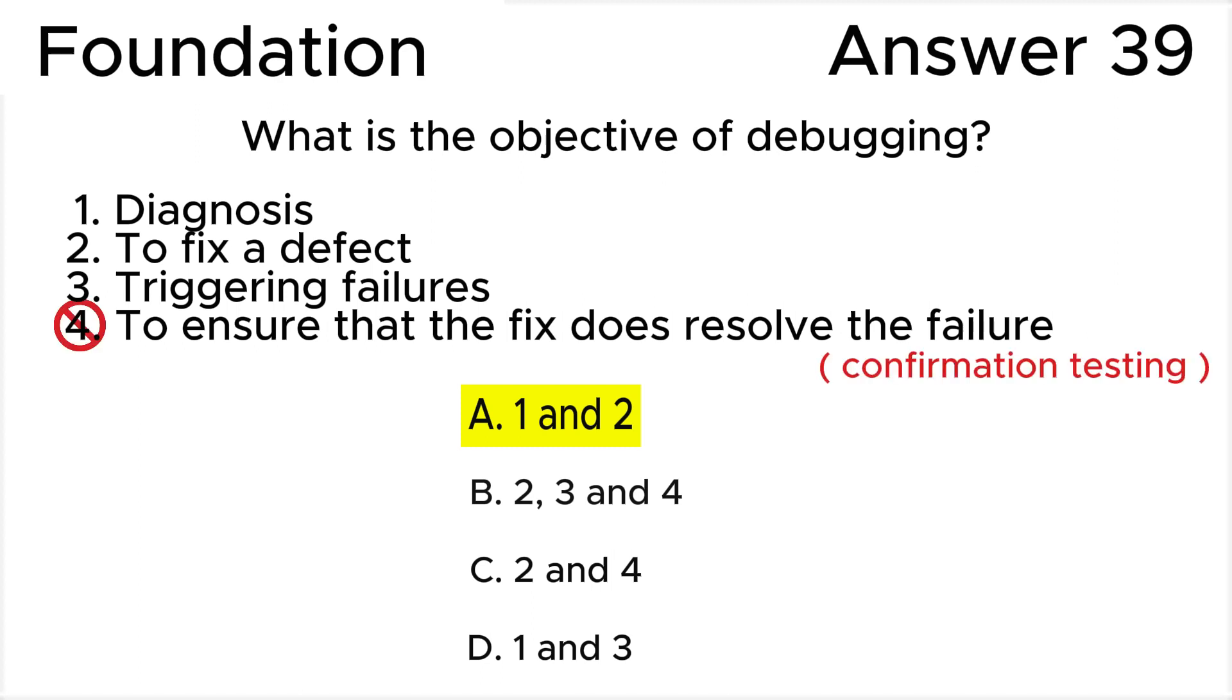Statement 4 is invalid because ensuring that the fix does resolve the failure is confirmation testing, not a debugging objective. Remember these two terms: confirmation testing is retesting to check if the bug or failure has been fixed, and